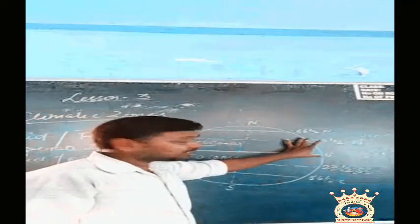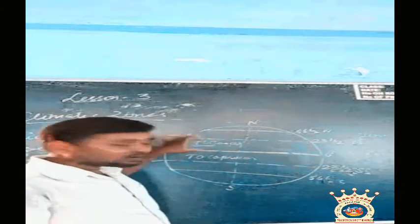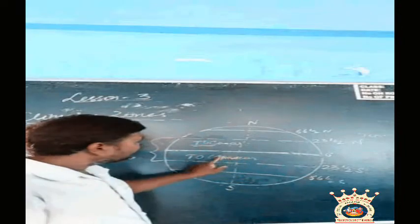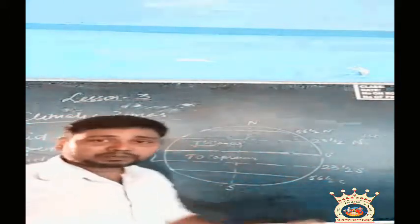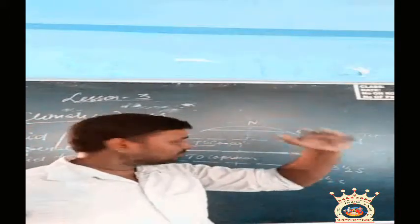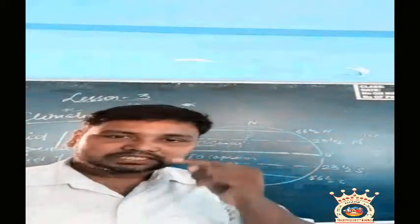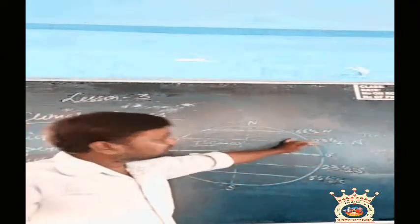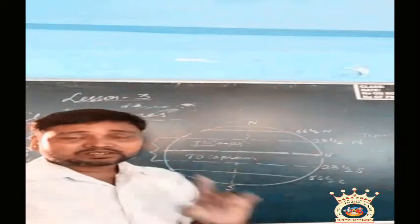The northern boundary at 23 and a half degrees is called the Tropic of Cancer. The bottom one in the south is called the Tropic of Capricorn. Together, from 23 south to 23 north, it is called as torrid zone.